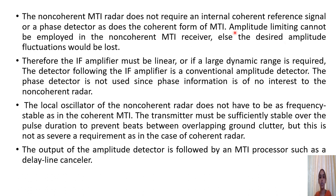Since we want to observe amplitude variation between clutter and moving target, amplitude limiting cannot be employed. The IF amplifier must be linear, or have a large dynamic range, and the detector following it is a conventional amplitude detector rather than a phase detector. The local oscillator and transmitter need not be as stable as in the coherent MTI case, making this type simpler, though they must be sufficiently stable to avoid overlapping of clutter signals with sufficient time interval between pulses.